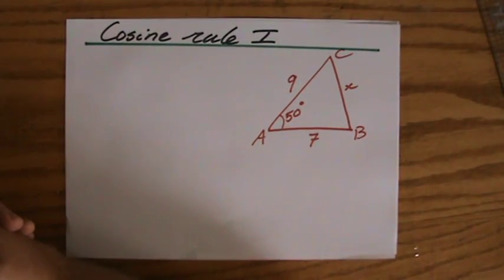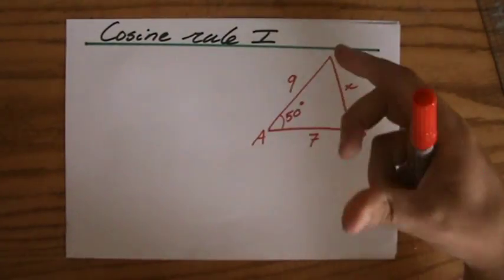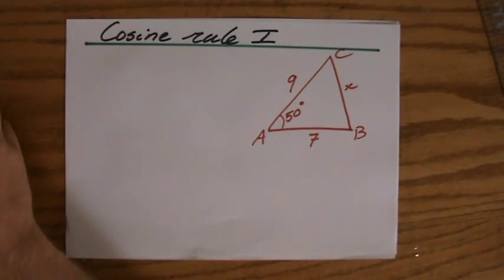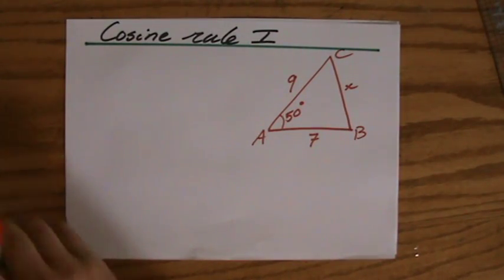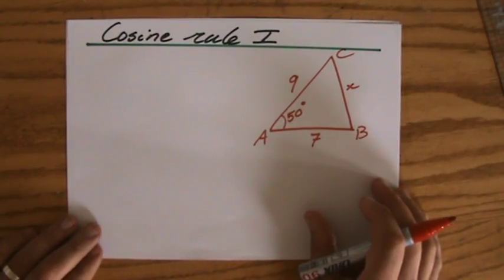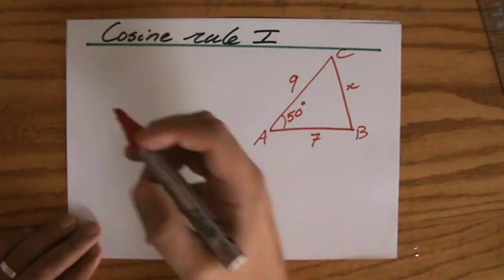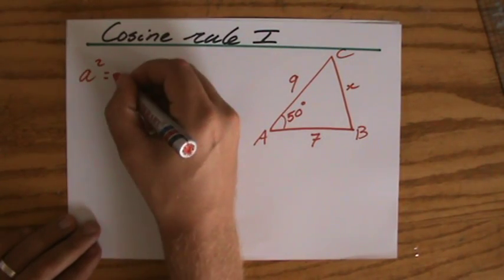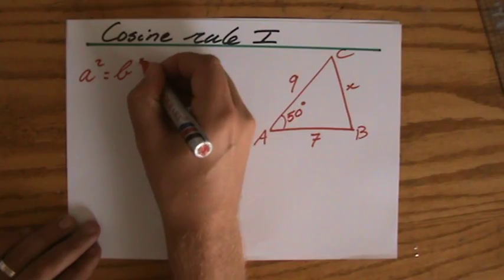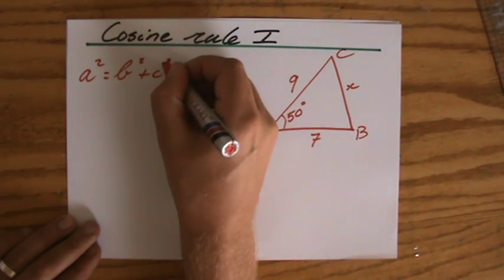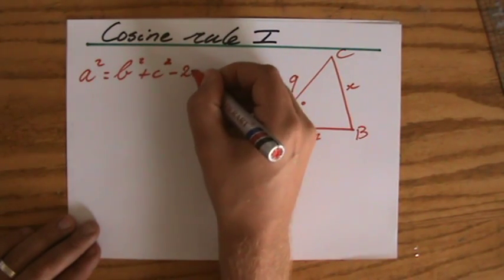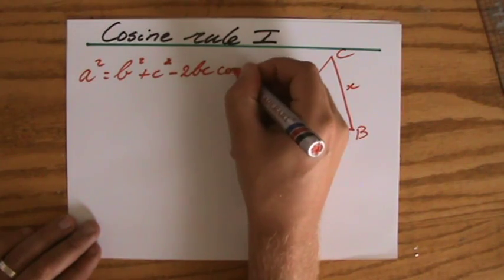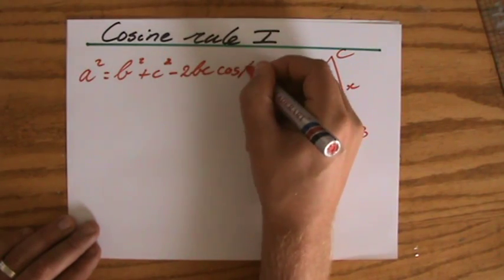So we can use the cosine rule. I'm just going to write down the cosine rule here now, and in the next videos we're going to do some example questions. The cosine rule says: a squared equals b squared plus c squared minus 2 times b times c times the cosine of A.